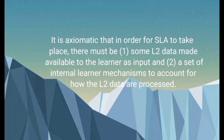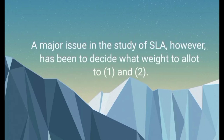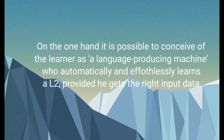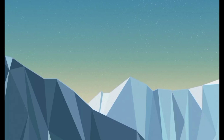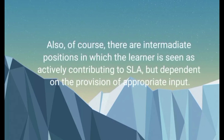It is axiomatic that in order for SLA to take place, there must be some L2 data made available to the learner as input and a set of internal learner mechanisms to account for how the L2 data are processed. A major issue, however, has been to decide what weight to allot to these two factors. On the one hand, the learner can be conceived of as a language-producing machine who automatically and effortlessly learns an L2, provided he gets the right input data. On the other hand, the learner can be seen as a 'grand initiator' — equipped with just those abilities needed to discover the L2, no matter how impoverished the L2 data are. There are also intermediate positions in which the learner actively contributes to SLA but remains dependent on appropriate input.